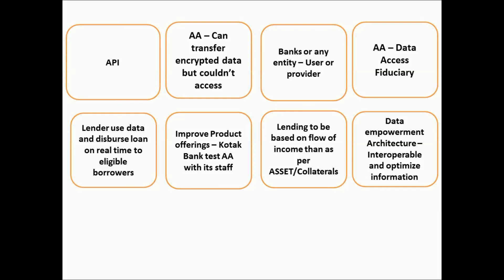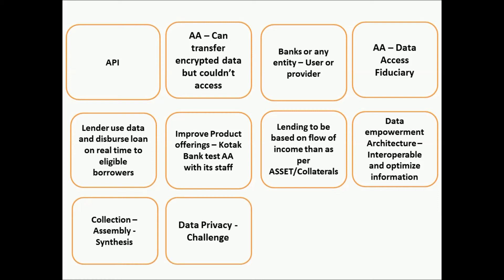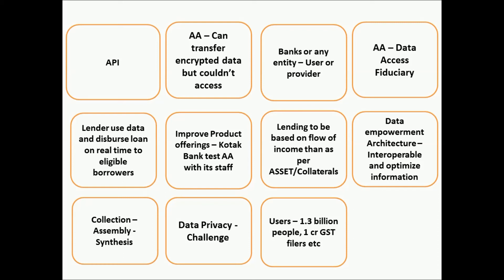The Data Empowerment Architecture is interoperable — it is not restricted to only banks. Data can flow from non-banks, from government departments, from the income tax department, and from telecom companies. Information is optimized for offering better products. Basically, account aggregators do three things: collect data from various sources, assemble and synthesize it, and present it in the required format. People may worry about data access, but since these are all regulated entities, data privacy is not actually a challenge.